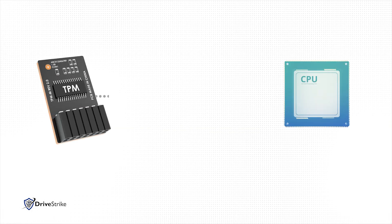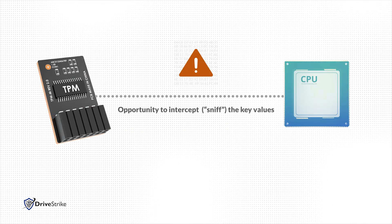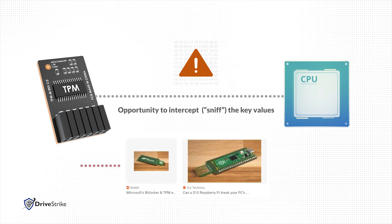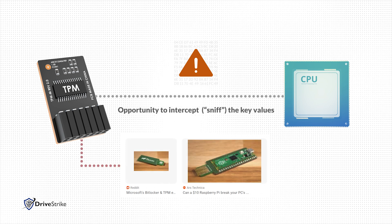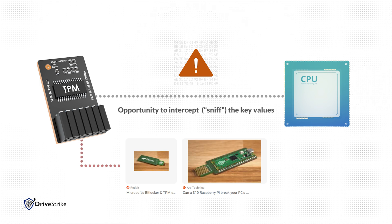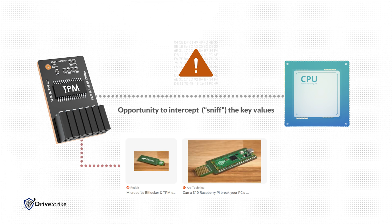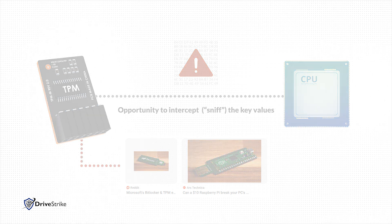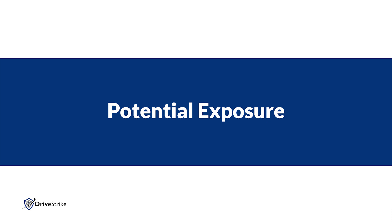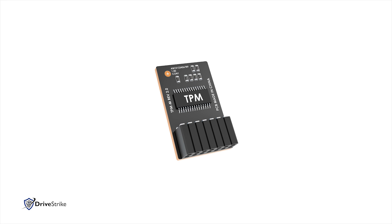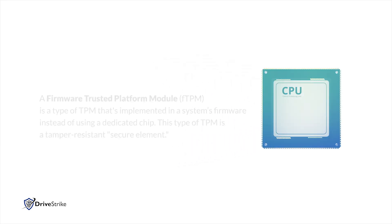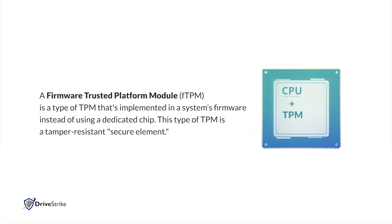Sophisticated attackers can obtain the key values through a direct physical connection in under 60 seconds. Keep in mind that in order to be successful, a hacker needs physical access to the computer and specialized probes and cables. While this vulnerability is a serious concern, not all configurations are at risk. For example, fTPM implementations house the TPM with the CPU and are not vulnerable to this specific attack.